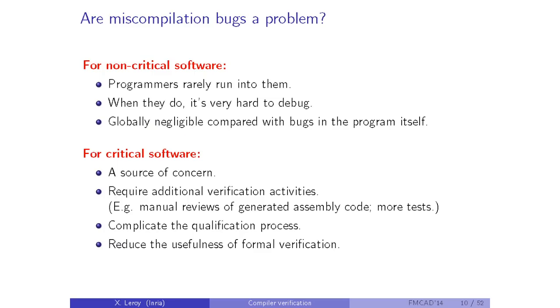Critical software — fly-by-wire systems, pacemakers, nuclear plant control — is a different matter. Miscompilation is a source of concern and requires additional verification activities: more testing, manual reviews of generated assembly code. Every manufacturer of critical software has their own recipes to keep miscompilation under control. This complicates the qualification process: when seeking FAA certification for airplane software, you have to explain what you are doing to address this risk.